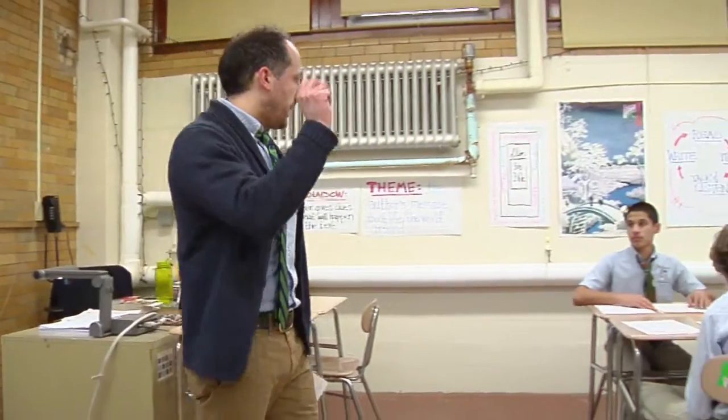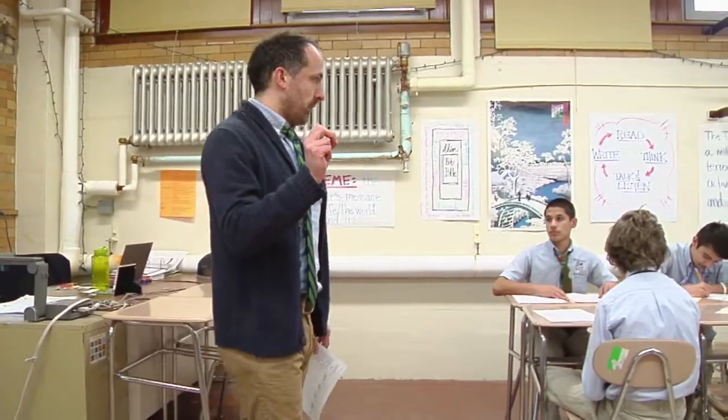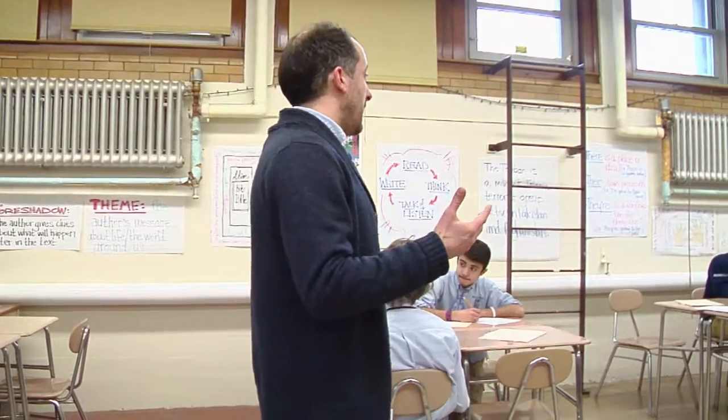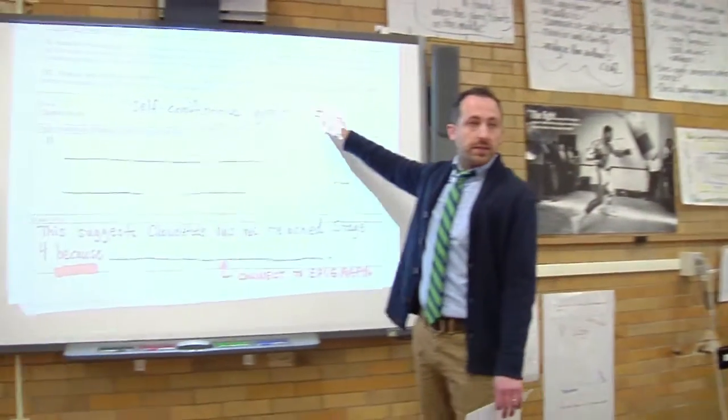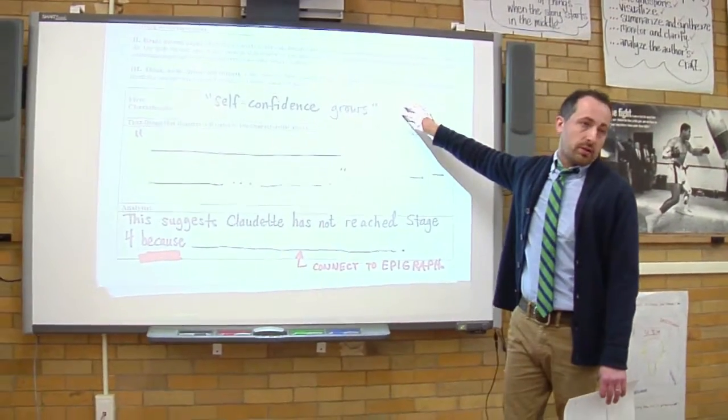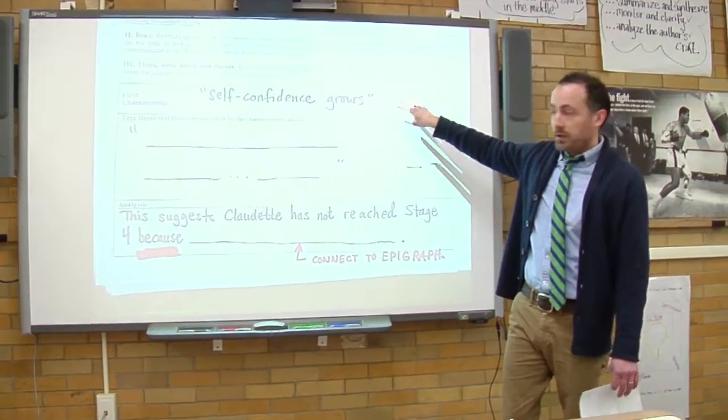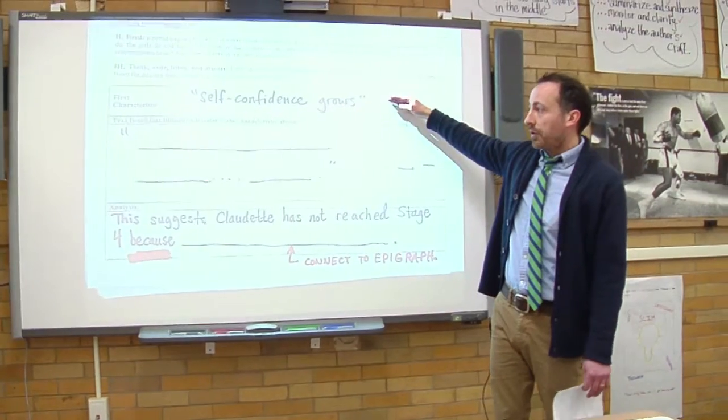As we read, your job is going to be to underline and annotate in the margins where you find evidence of Claudette, Mirabella, or Jeanette either reaching or failing to reach stage four. You're going to jot down the characteristic that you think the character shows or doesn't show in this first box.